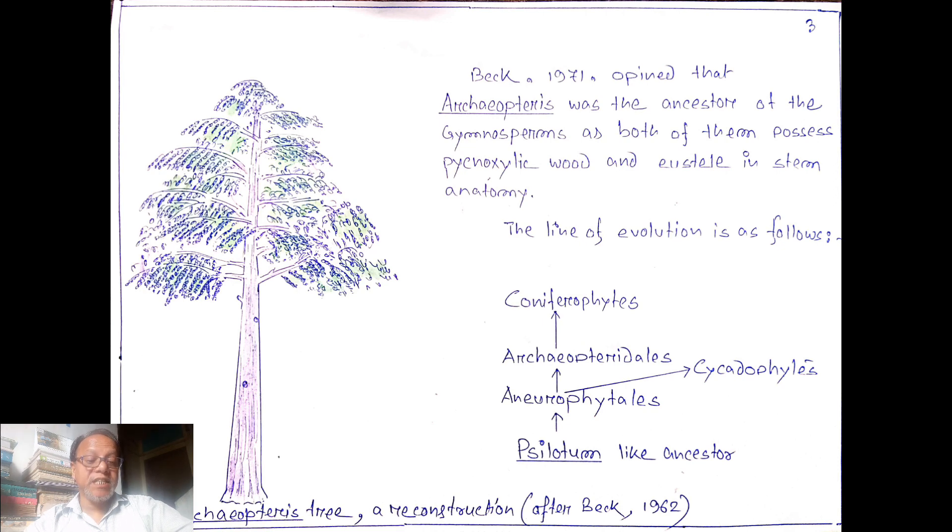The line of evolution is as follows. From the bottom, the ancestor is Psilotum-like structure, a member of Pteridophyta. It evolved to Aneurophytales, then to Archaeopteridales and Protopitales. Archaeopteridales later evolved to Coniferophytes. From this line it is clear that gymnosperms have evolved from Pteridophyta through Progymnospermopsida.